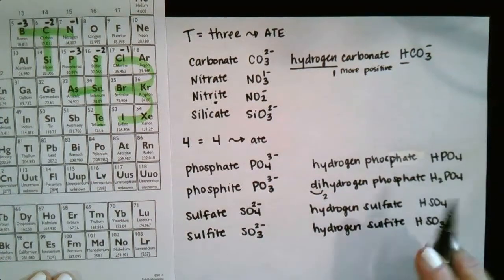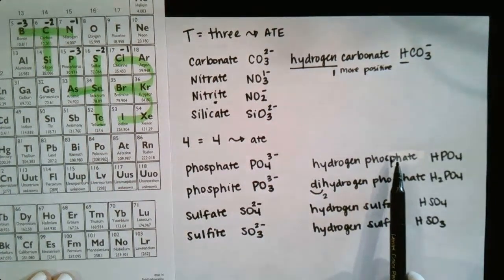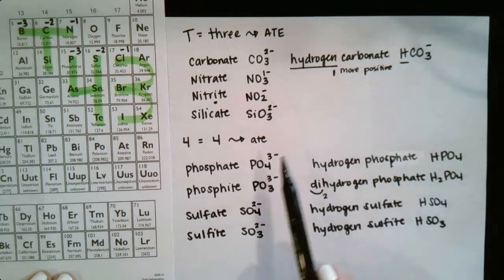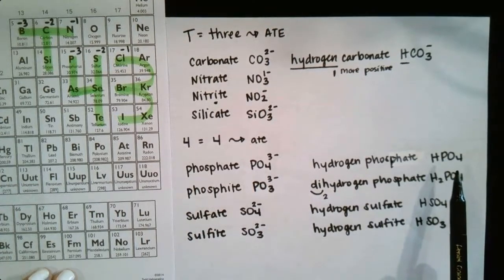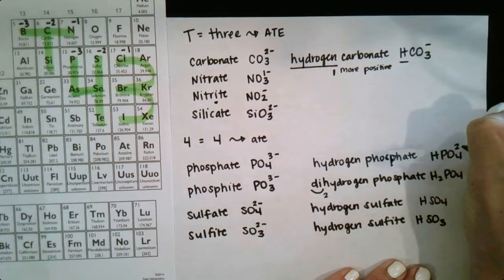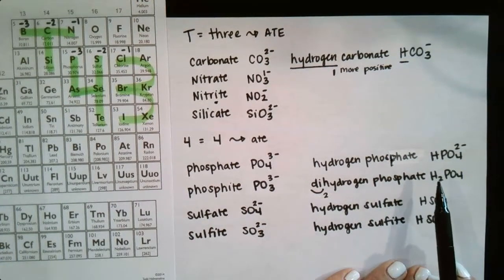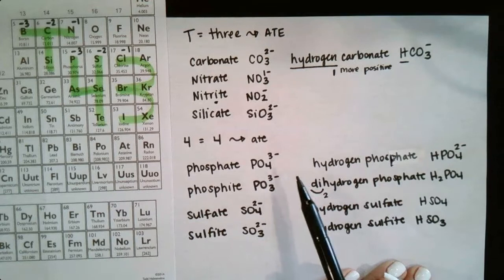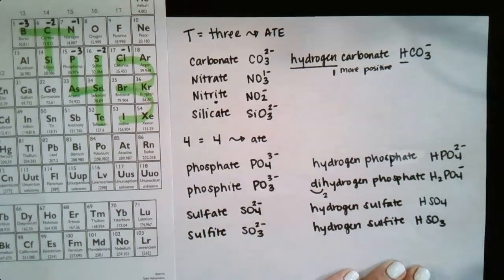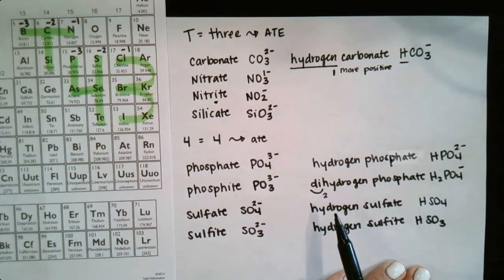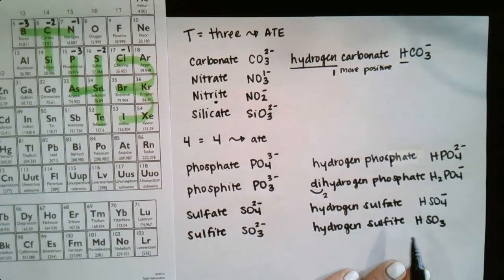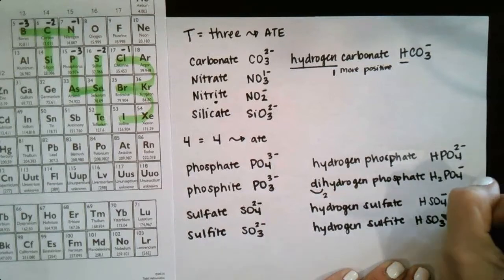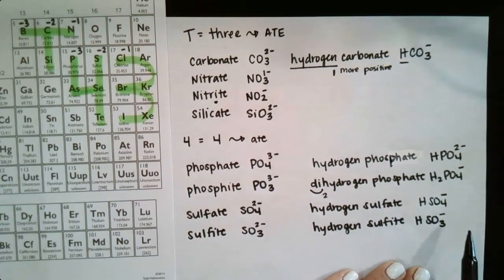Now if you recall, this is the second part of this, is that when we have a hydrogen in front, it makes us one more positive. So if this was PO4, 3 minus, then it's HPO4, and now it's going to be 2 minus. And if it's H2PO4, that makes us 2 more positive, so H2PO4 minus. And for hydrogen sulfate, we have HSO4, this is minus, and hydrogen sulfite, HSO3, that's also going to be minus. Remember, we're just one more positive than the partner.